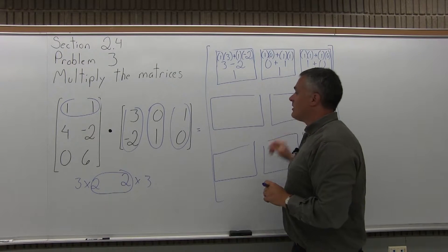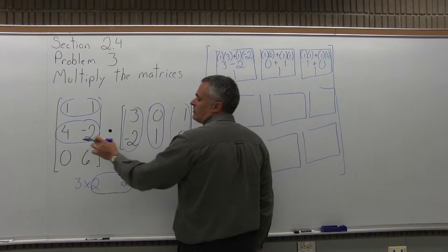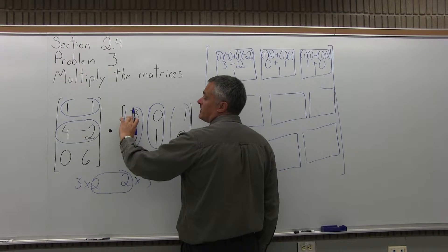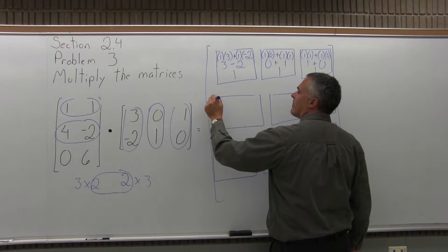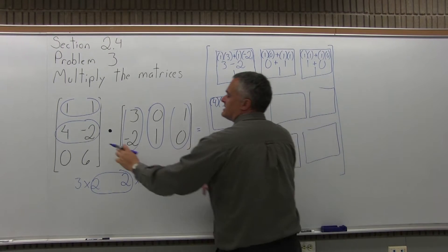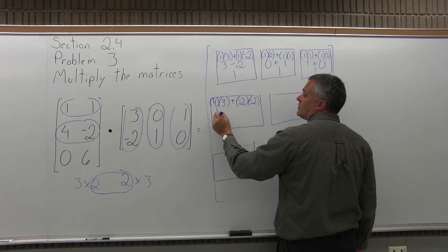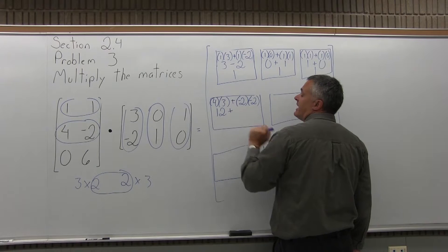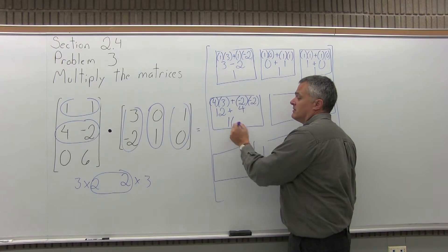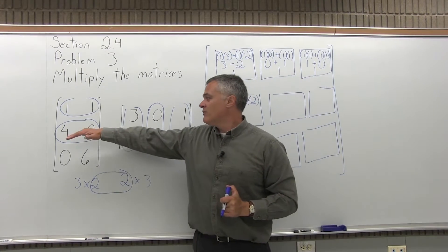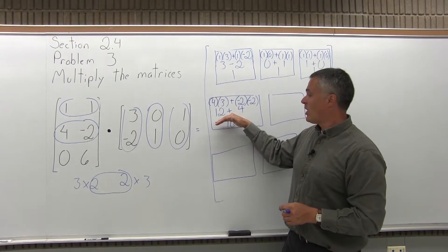Now to fill in the middle row of my solution, I'm going to multiply the middle row, 4, negative 2, times each column in the second matrix. Starting with the middle row, 4, negative 2, times the first column, 3, negative 2. First times first is 4 times 3, plus second times second is negative 2 times negative 2. So 4 times 3 is positive 12, and negative 2 times negative 2 is positive 4 — the negatives cancel. 12 plus 4 is 16, going in the middle row and first column.